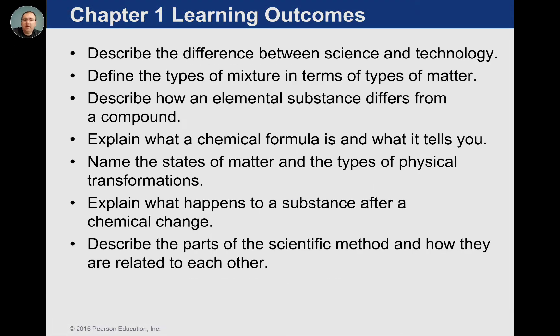One thing we have to worry about in this chapter is the definition of chemistry. Chemistry is the topic of the course — it's really just thinking about matter and how it changes. When matter changes, it has two different types: chemical and physical, and we'll talk about examples of those. Matter itself is made up of lots of things and we need a process to classify matter into several different types. There's also a little bit of scientific method in this chapter, and that's about it for this icebreaker chapter.